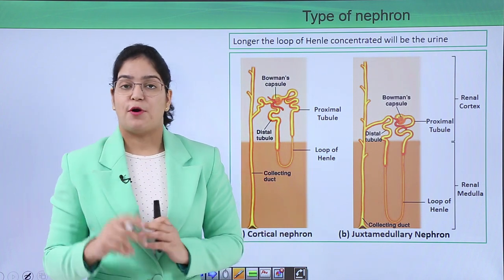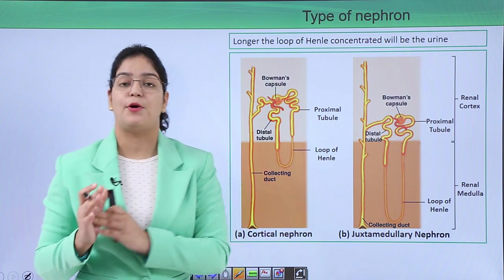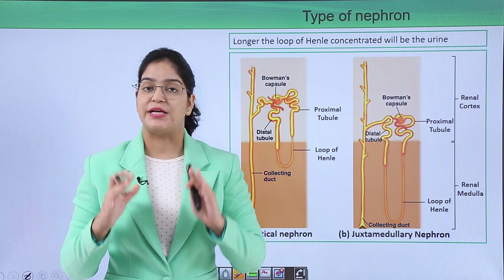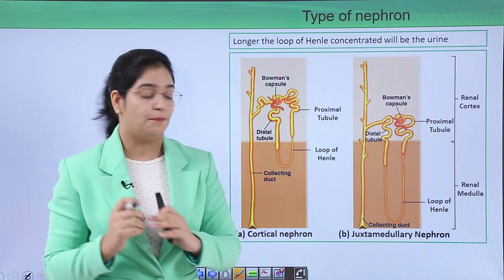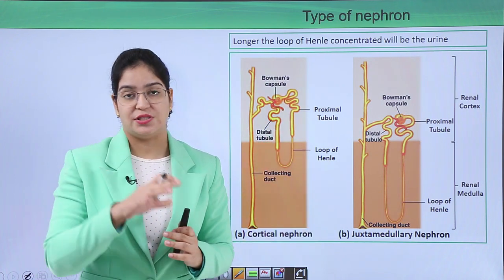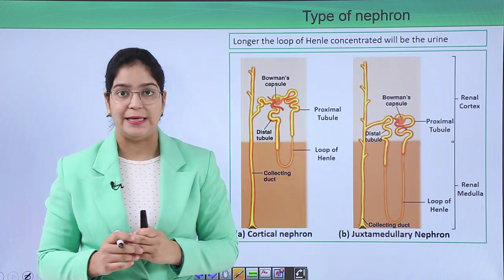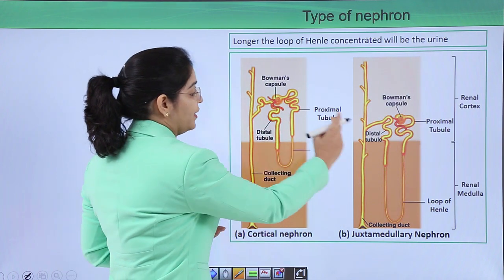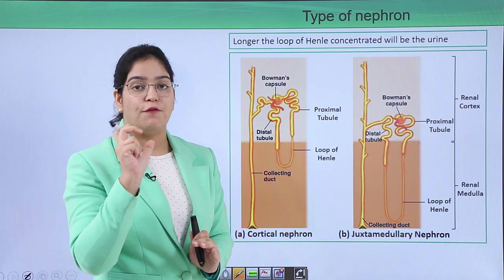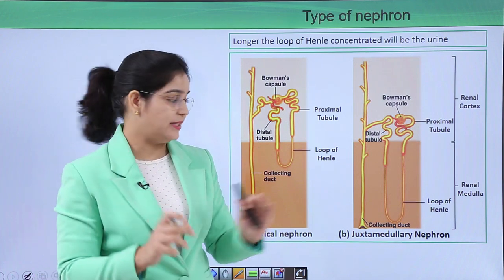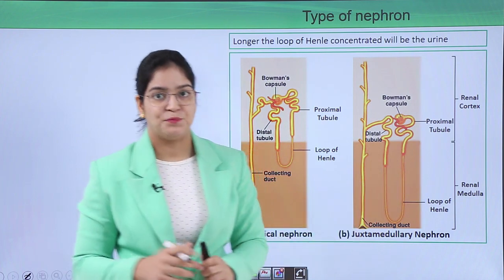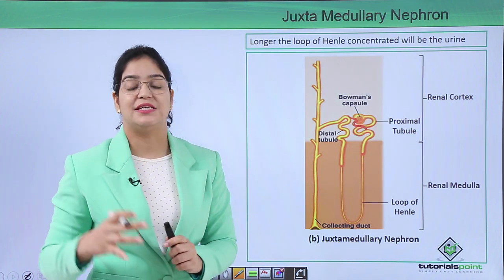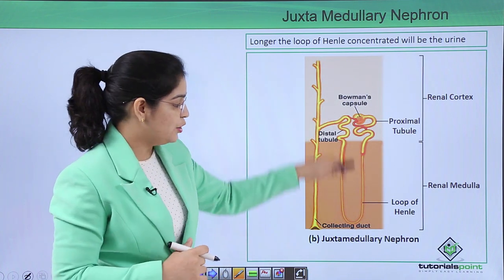Now let's learn about the types of nephron. We have two types: the cortical nephron and the juxtamedullary nephron. The cortical nephron functions to form urine, while the juxtamedullary nephron functions to form concentrated urine. Since we are talking about concentration of urine, we need to focus on the juxtamedullary nephron. The main difference you can see in the diagram is in the loop of Henle — the loop of Henle is the main part involved in concentrating the urine.